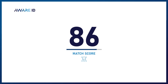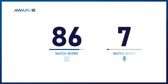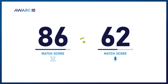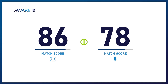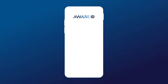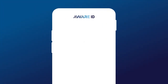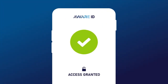As an admin, you determine the score threshold for authentication. For extra security, you can require a fused score of both face and voice IDs. If the score passes the threshold, they are verified. Once authenticated, the user will have the access they need.